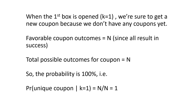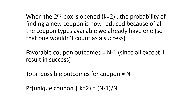When the first box is opened we are sure to get a new coupon because we don't have any coupons yet. So the number of favorable outcomes for us is n since all of these result in a success, and the total possible outcomes for coupon is also n. So the probability is 100%. When the second box is opened, the probability of finding a new coupon is now reduced because of all the coupon types available we already have one, so that would not count as a success. The number of favorable coupon outcomes is n minus 1, and the total possible outcomes is n. So the probability becomes n minus 1 over n.